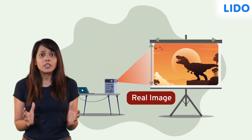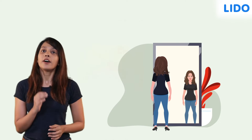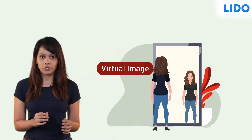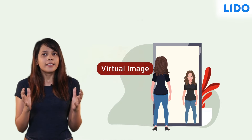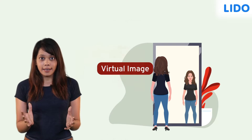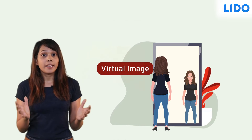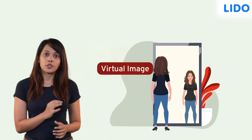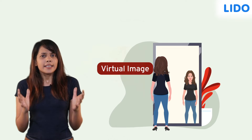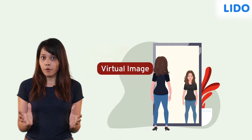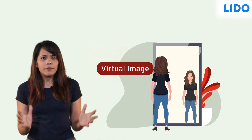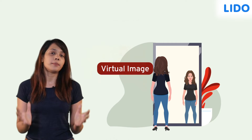If the image cannot be taken on a screen, it is called a virtual image. The image we see in the plane mirror is virtual. It appears to be formed somewhere behind the mirror.